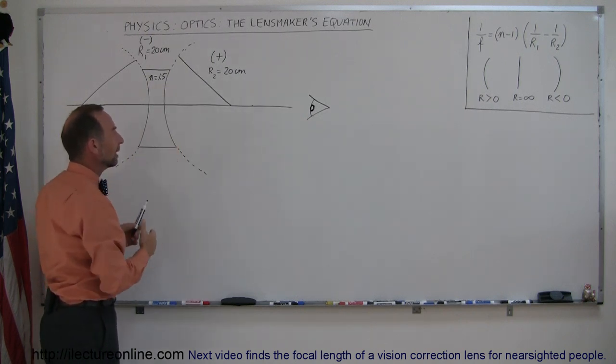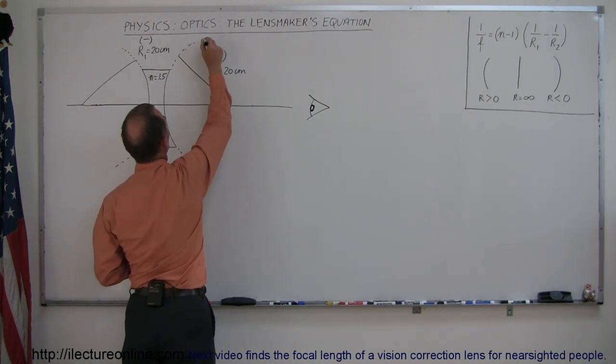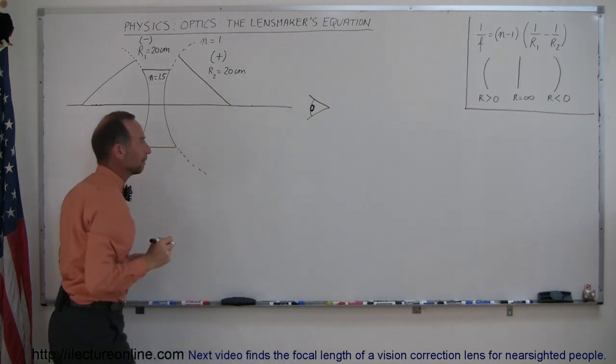And again, now we have the lens in air, so the index of refraction outside is 1 for air.